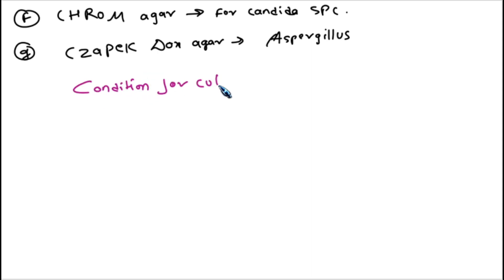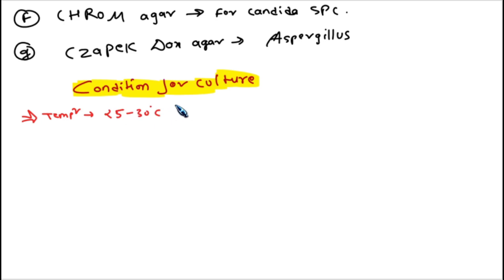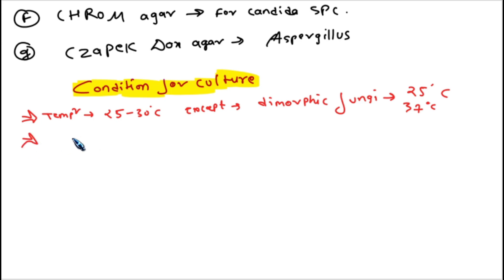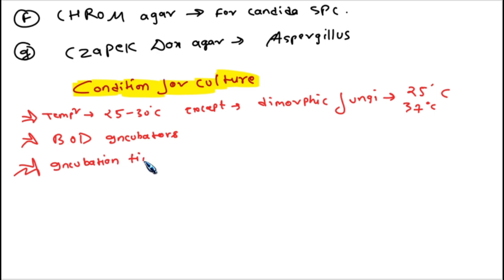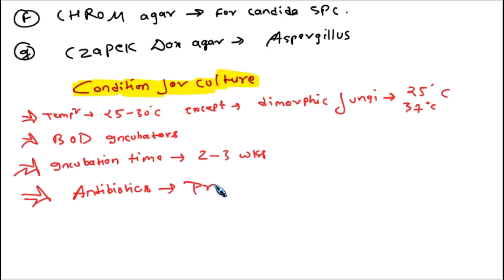The conditions required for fungal culture are: temperature of 25 to 30 degrees Celsius, though dimorphic fungi can also grow at 37 degrees Celsius; a proper supply of oxygen using BOD incubators; an incubation time of generally two to three weeks; and the addition of antibiotics to prevent bacterial growth.